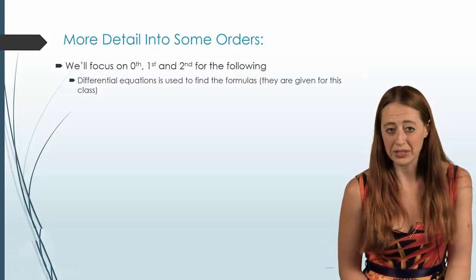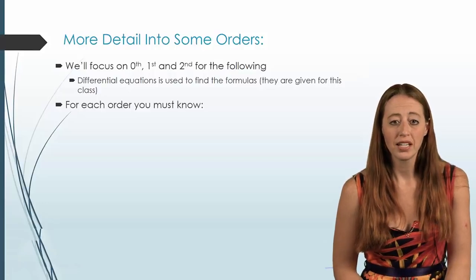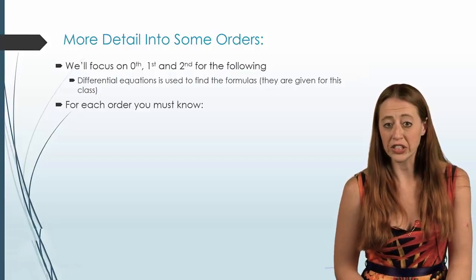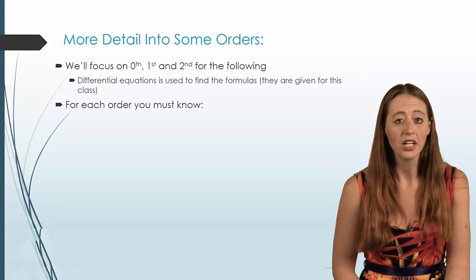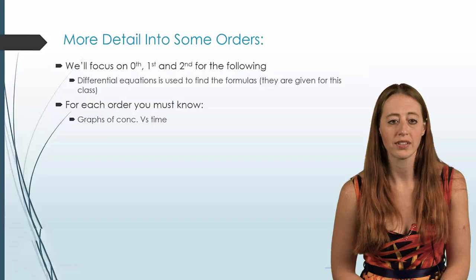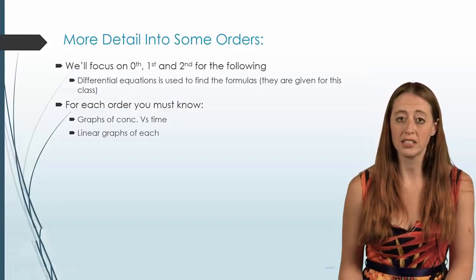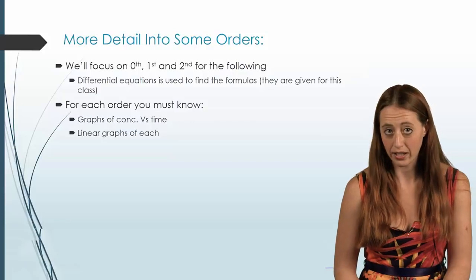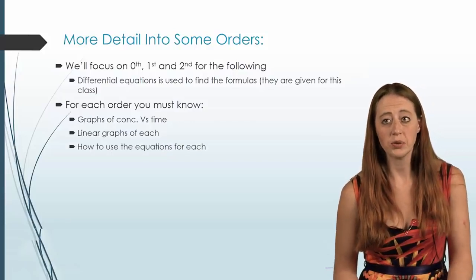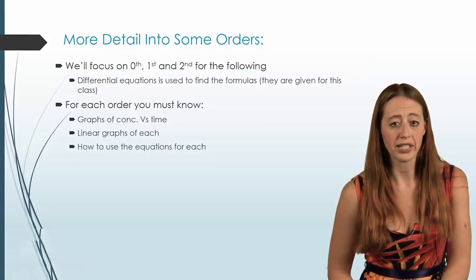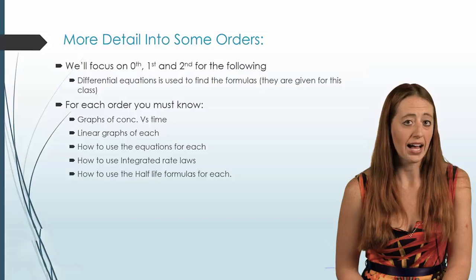We don't know differential equations, so in this class we just give you the formula. For each order you're going to need to know the graph of concentration versus time and what that looks like. You should be able to recognize it and sketch it. You're also going to need to know the linear graph for each, which will make more sense once we get to first and second order.